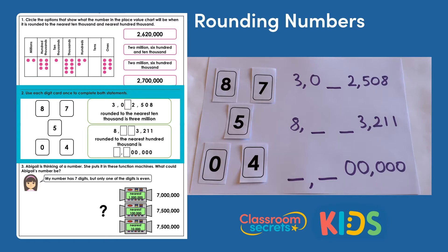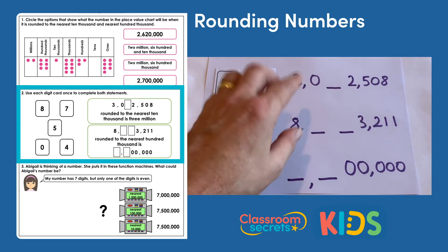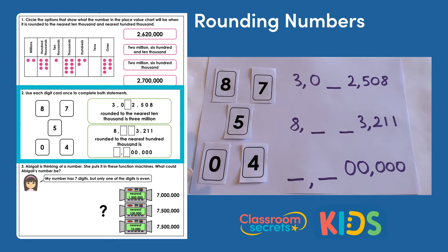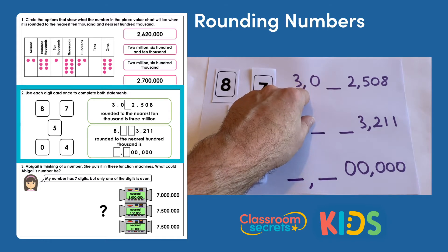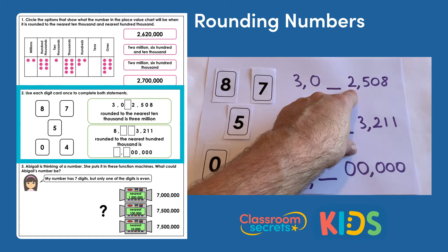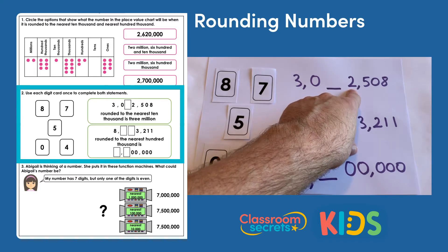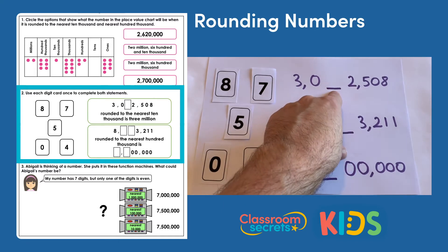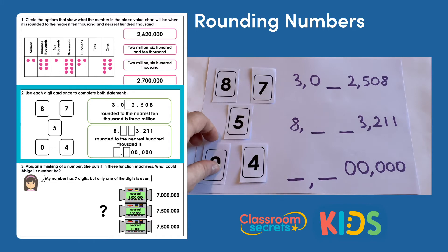Question two says: use each digit card once to complete both statements. I've written the numbers out with the missing spaces for the digits. Looking at the first number, it says that this number rounded to the nearest ten thousand is three million. We're rounding to the ten thousands digit, and since the thousands digit is two — less than five — we round down. For that digit not to change and round to three million, it's going to have to be a zero, so we know the zero gets used there.